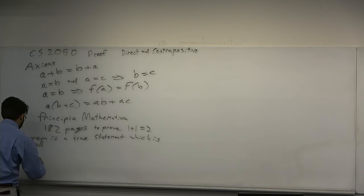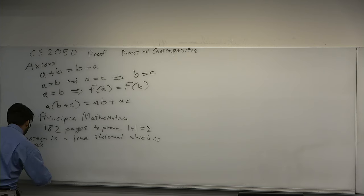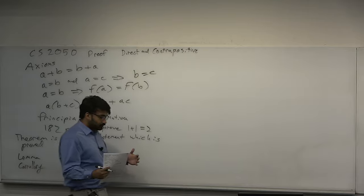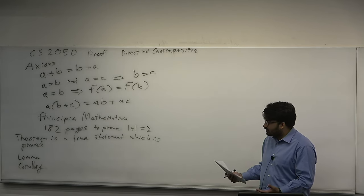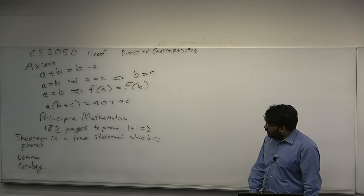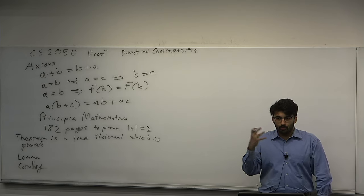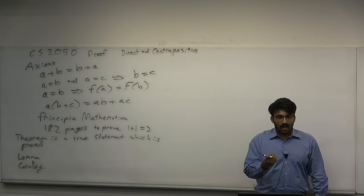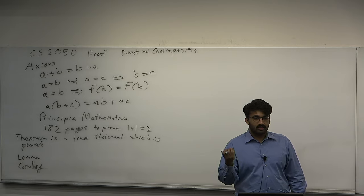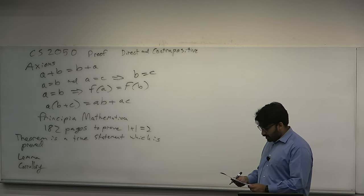A lemma and a corollary are simply kinds of theorems. A lemma is like a prior helper theorem — a tiny helper theorem used to prove a larger statement. You prove the lemma first; it seems unnecessary, but it helps make the proof of the main theorem cleaner. A corollary is a tiny theorem that comes after some main theorem — you get it almost for free; it's like a special case. That's what a lemma and a corollary are.